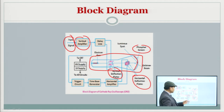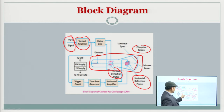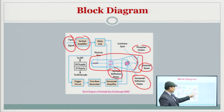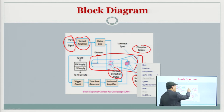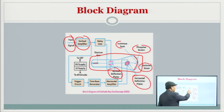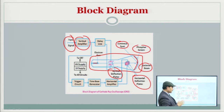The other components include the phosphorous screen, the electron gun, and the electron beam. When the electron beam strikes the phosphorous screen, it generates a luminous spot which you can see on the screen.